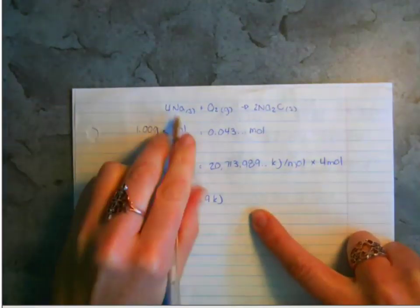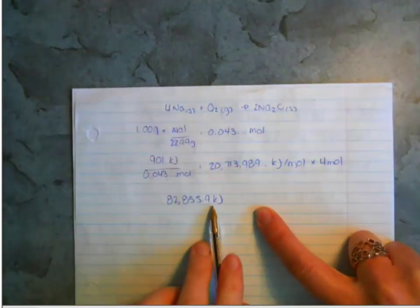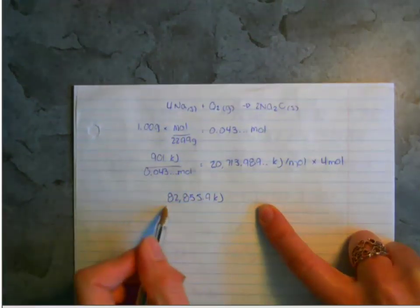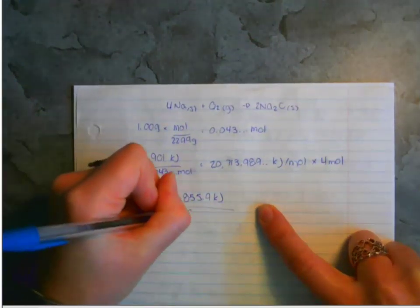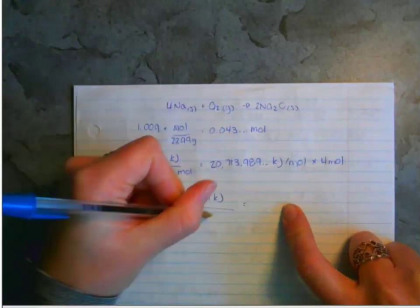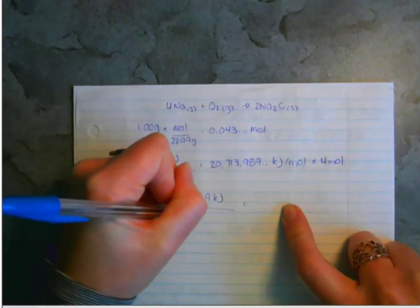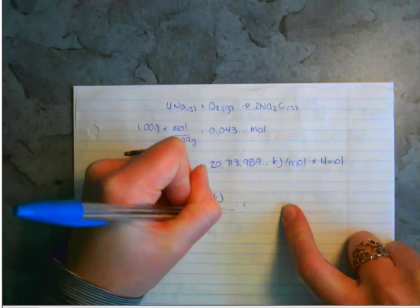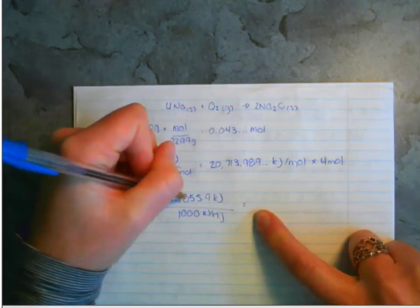Because the answers are given in megajoules, I need to divide this by a thousand - kilojoules per megajoule.